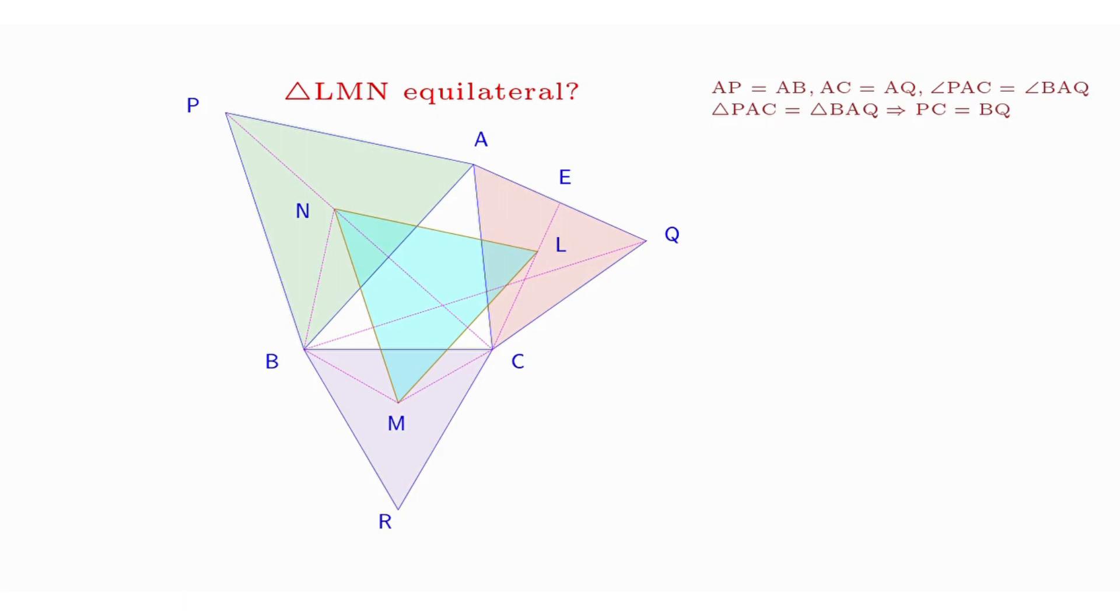In the next step, we will prove that triangles MCL and BCQ are similar. Name E as the point of intersection between the lines containing line segments CL and AQ.